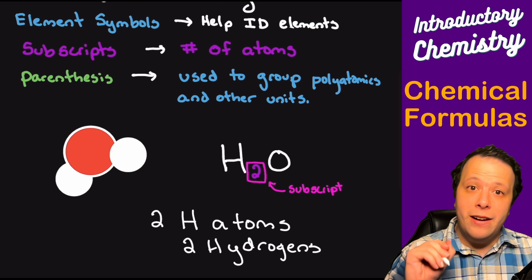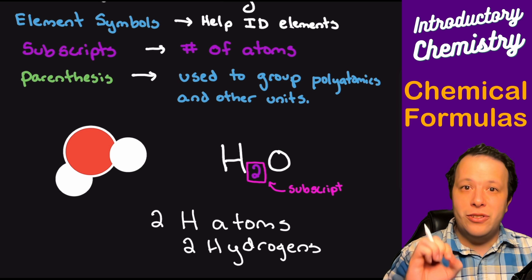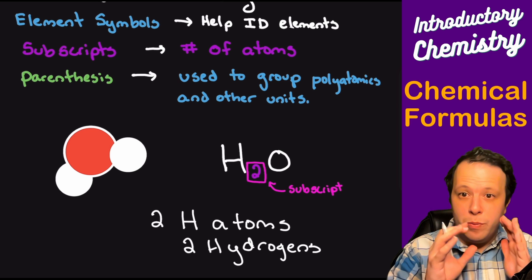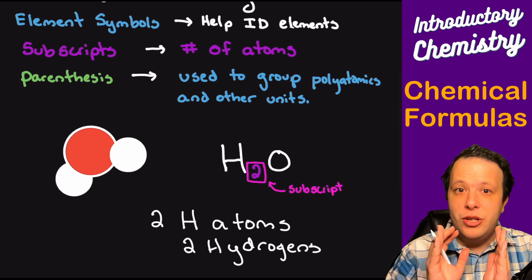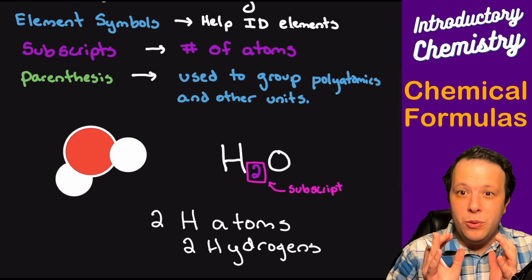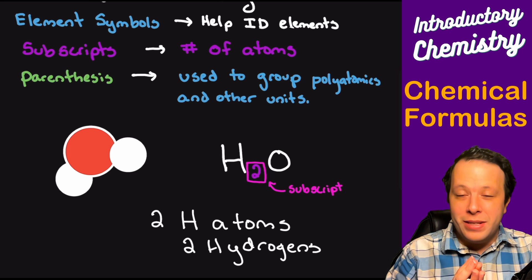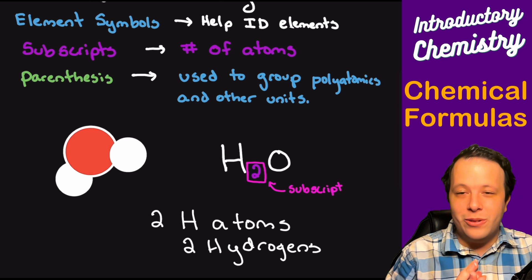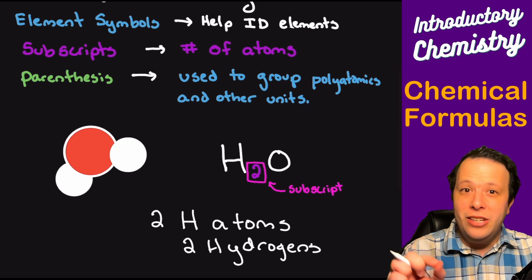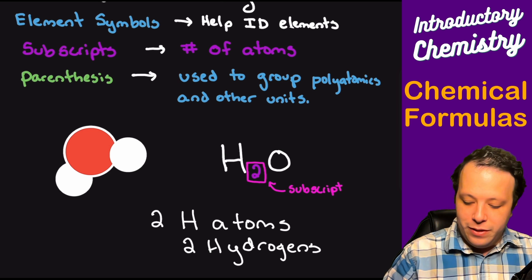Sometimes you also see the use of parentheses as well. Now, we'll talk about them more in detail soon, but they're usually used to group certain polyatomics or formula units together so that way you are counting and balancing your charges correctly. It's very important that when something's in parentheses, they stay together, they belong together. It's just letting you know how many units of that particular molecule you have.